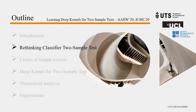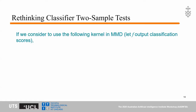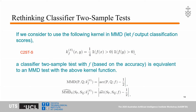We have two main categories of two-sample test methods: the Classifier Two-Sample Test C2ST and the kernel-based MMD test. To decide which direction to pursue, we show that the classifier two-sample test is actually a special case of the kernel MMD test. If we use the following sine kernel in MMD — where the kernel is a sigmoid function — we show that C2ST is equivalent to the MMD test with this sine kernel.